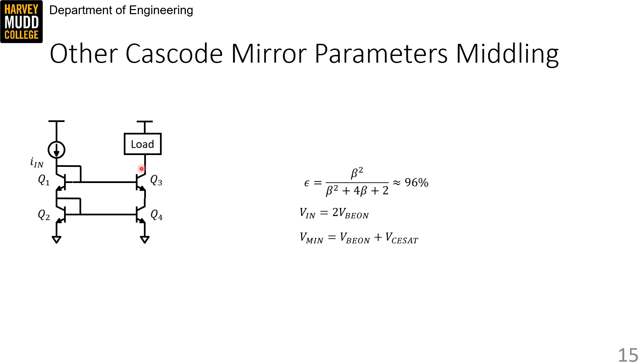And finally, we need VCE set above that at this output node. So, V min is VBE on plus VCE set. This practice of navigating around a large signal circuit by climbing up and down VBE on values and VCE set values is really common, and you should look for opportunities to do it when you do large signal analysis.